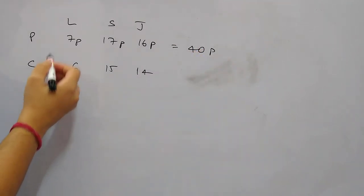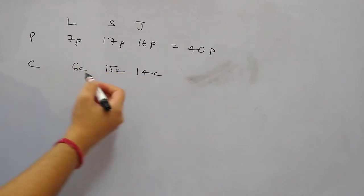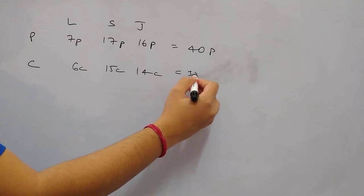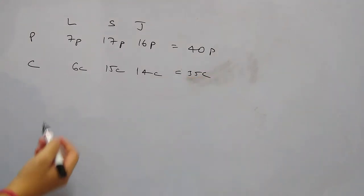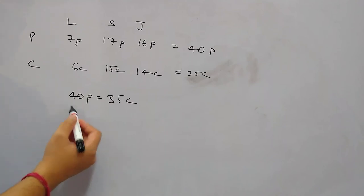And for chips let's say the number of chips are 6c, 15c and 14c. Then total number of chips would be 35c. As per question, 40p is same as 35c. Total number of popcorn packets is equal to total number of chips packets.